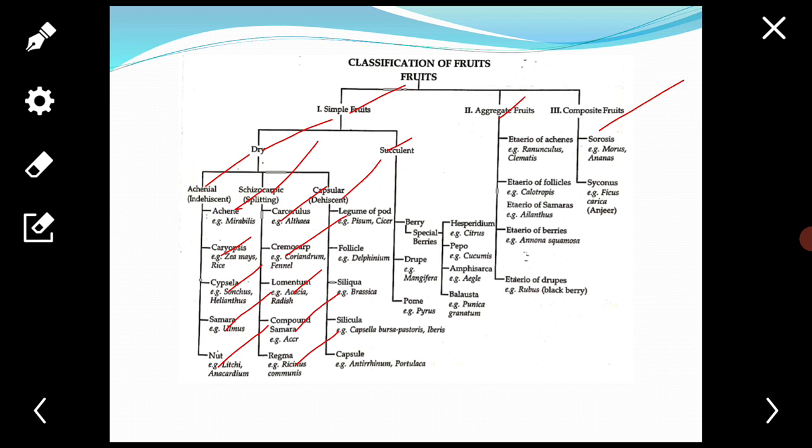Second is cremocarp. The fruit breaks from below upward into two single seeded indehiscent segments called mericarps. The mericarps are attached to the tip of a central axis or carpophore. Example: Coriandrum, fennel.